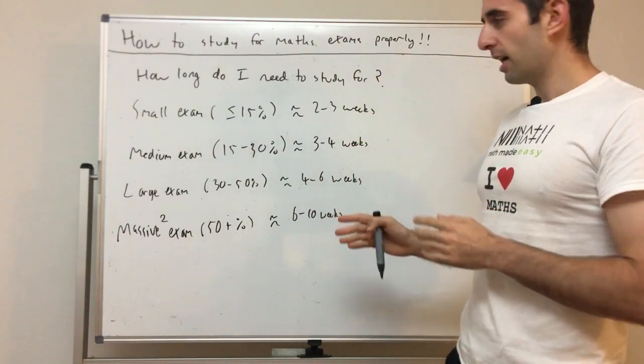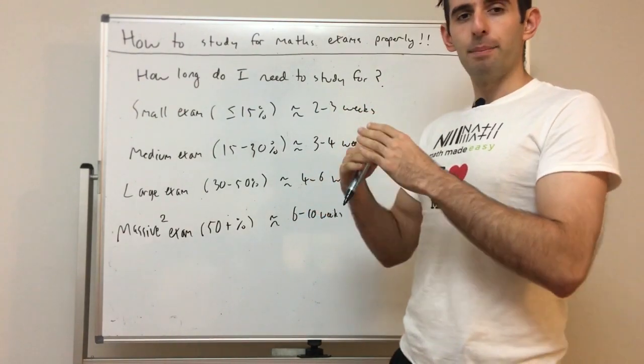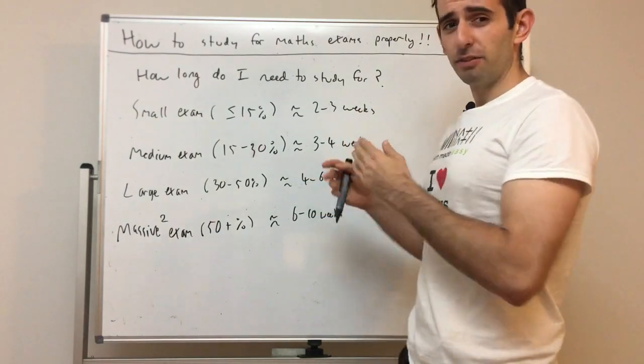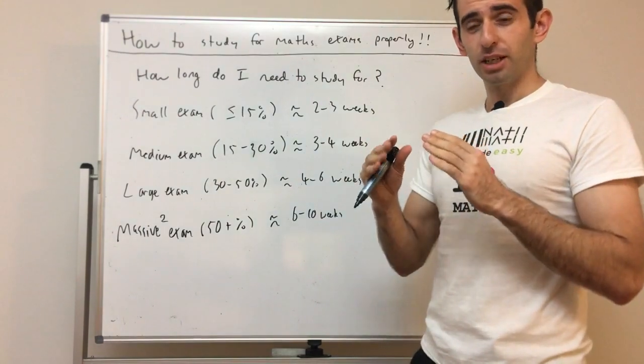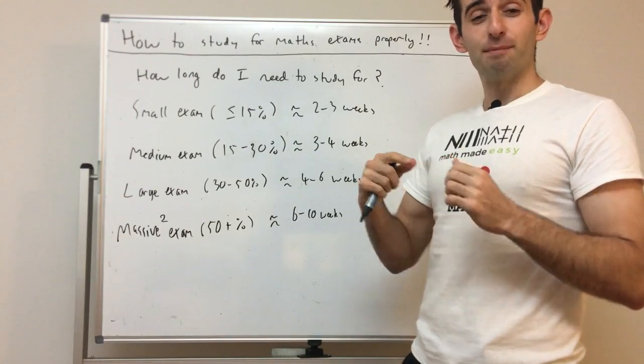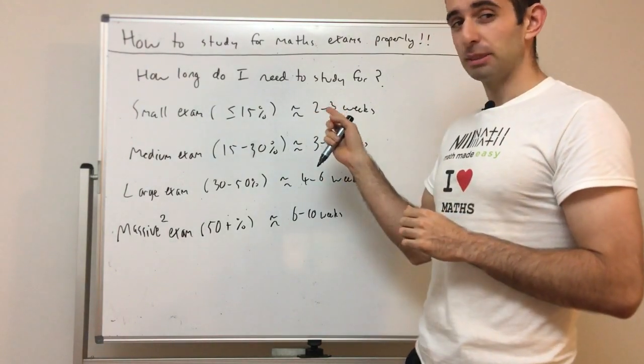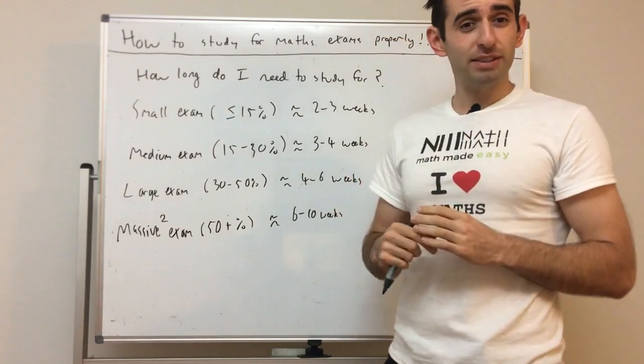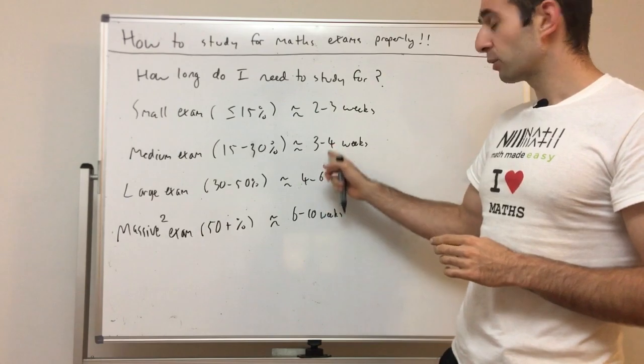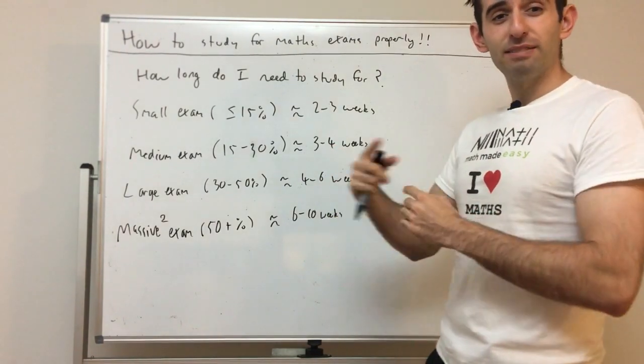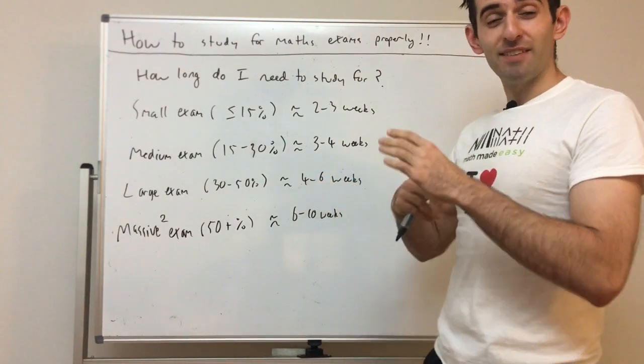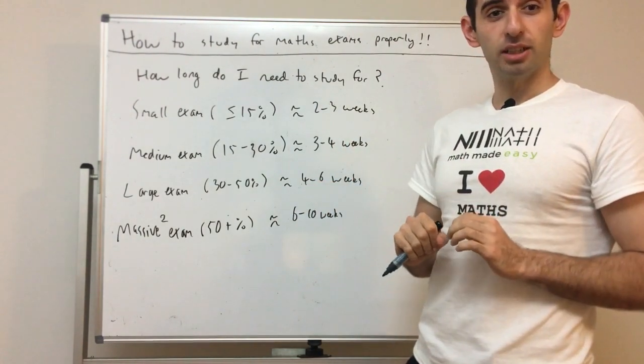Now that we know how long we need - note these are minimums if you want to do well. If you really care and you want to do well, you need to be studying for this long because of time management. You're going to have multiple exams at once. Especially with half-yearlies, you're going to have five different exams, so you need to be studying for half-yearlies in this period because you've got five different exams at least to study for. You need to make sure you're studying long enough to cover everything for each subject.